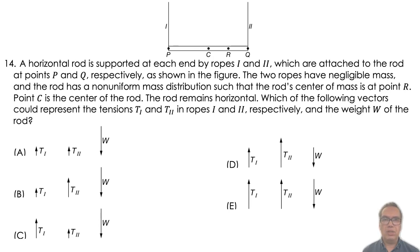Which of the following vectors could represent the tensions T1 and T2 in ropes 1 and 2 respectively, and the weight W of the rod?